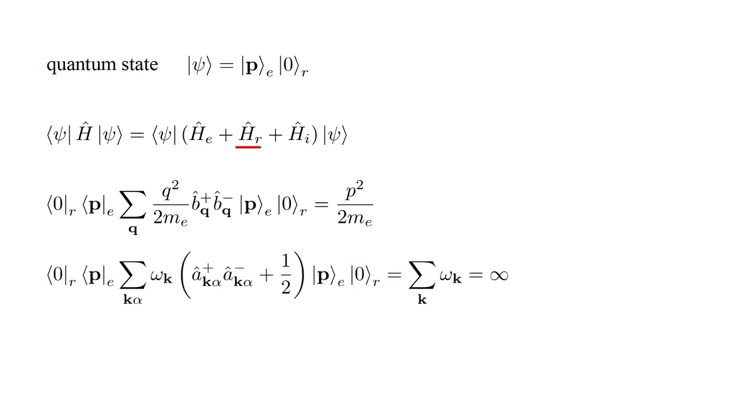The radiation Hamiltonian is the sum over all photon modes k-alpha of omega-k times the number operator, a-hat q-alpha plus a-hat q-alpha minus, plus one-half. There are no photons, so this leaves one-half omega-k for each mode. There are two polarizations alpha for each k-vector, which cancels the one-half, and we obtain the sum over all k of omega-k. Since there are an infinite number of photon modes, and omega-k increases with k, this sum equals infinity. This infinity is the zero-point energy we discussed in video two.